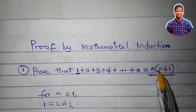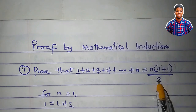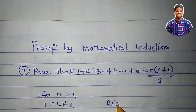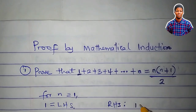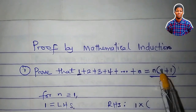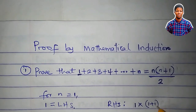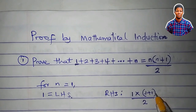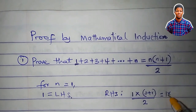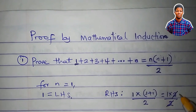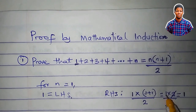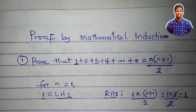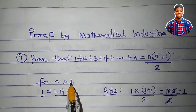Let me plug in 1 for n in this expression and see if it will give me 1. At the right-hand side, we have n is 1. That will be 1 times 1 plus 1, all over 2. 1 plus 1 is 2, so I have 1 times 2 all over 2. 2 cancels 2, what's left is 1. So the right-hand side is equal to the left-hand side, which is 1. That means it is true for n equal to 1.